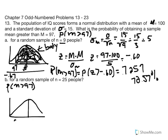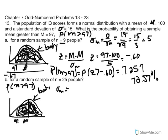We have our distribution again — 97 is the sample mean of interest, 100 is the population mean, and we're still talking about the body of the distribution. We need to calculate the standard error of the mean: 15 over the square root of 25, which equals 15 divided by 5, giving us 3. So standard error decreased as sample size increased.